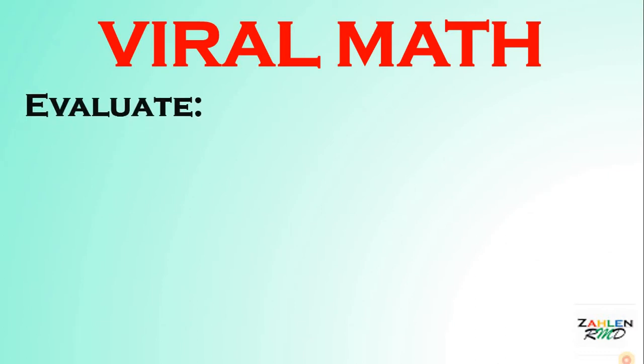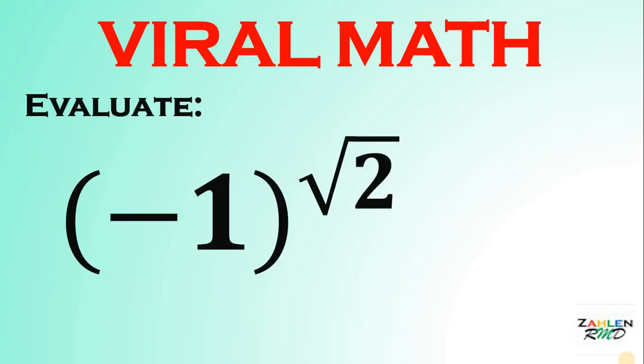Here's the question. Evaluate the following: negative 1 raised to square root of 2. So here's the choices. Letter A is 1, Letter B is negative 1, and Letter C, none of the above.